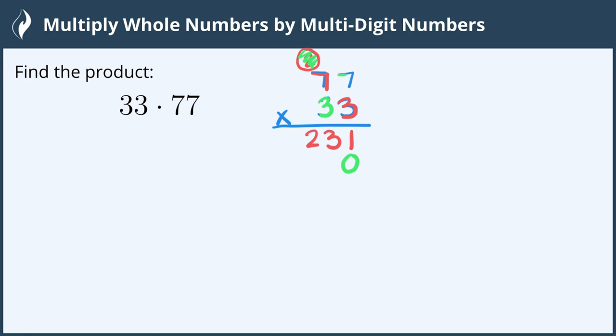Now I do 3 times the first 7 which is 21 so again I'm going to carry a 2 and put a 1 down here. Now the 3 times the second 7 gives me 21 and I add the 2 that I carried before which gives us 23.